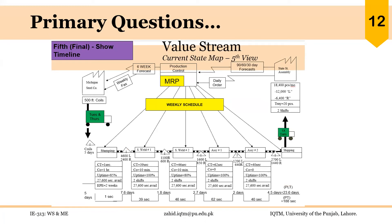From the VSM discussed in the previous session, one obvious question concerned the large amount of work-in-process inventory between processes. There was a lot of WIP inventory, and a lot of MURA as well, because the WIP was varying significantly between processes and there was a large difference in cycle times. The system was not balanced at all. We can critically analyze this current VSM and move towards a future state VSM using different tools of lean manufacturing.